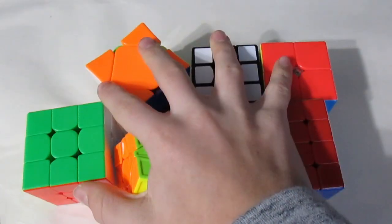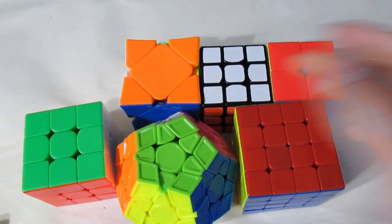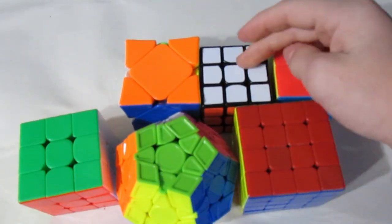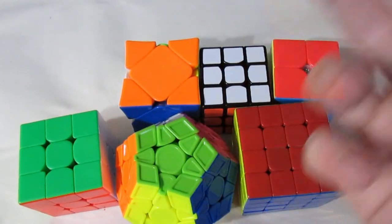They have 2x2, 3x3, 4x4, 3x3 one-handed, Skewb, Megaminx, and feet—3x3 with feet. But I'm not doing that, so let's start out with 2x2.